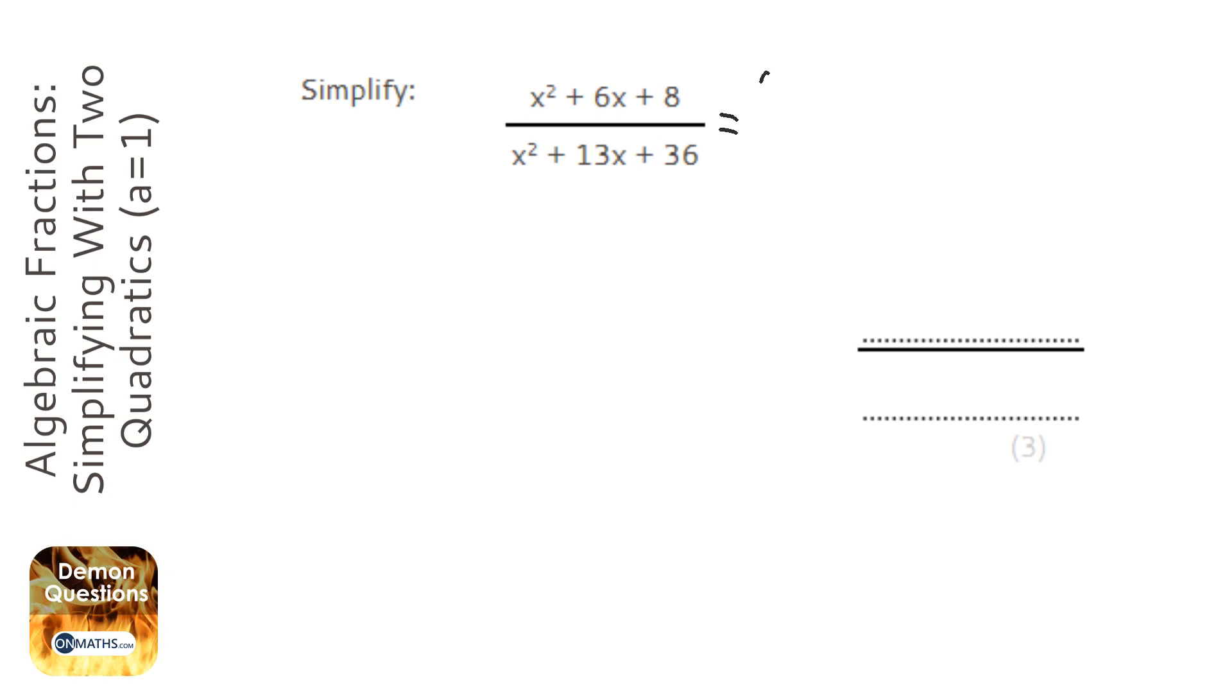So, looking at the top, we need two numbers that times together to make 8 and add together to make 6. And we're going to have x at the start of both of these because it's an x squared. So that's going to be 4 and 2.